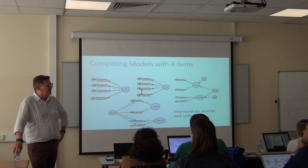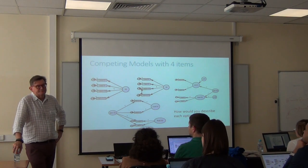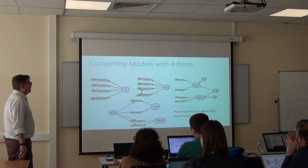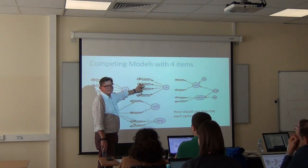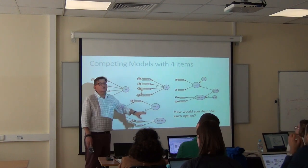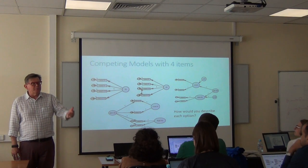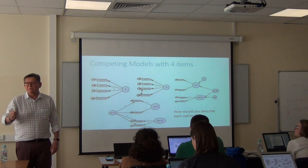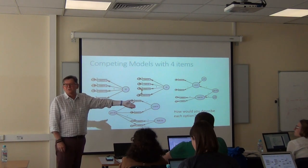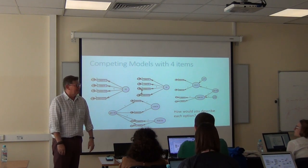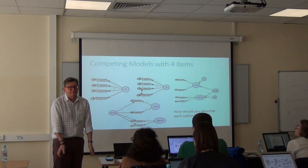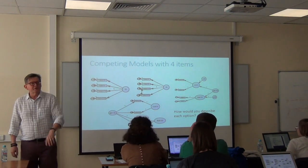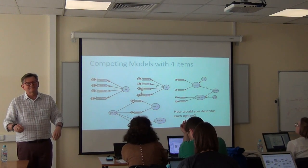Which model was the best? Unfortunately, the correlated residuals model was the best, because those two scores are correlated. Your ability to know the meanings of words explains why you know another word that means the same thing and a word that means the opposite — it's the same skill, but they created two scores. They should have really just given us one score for language.